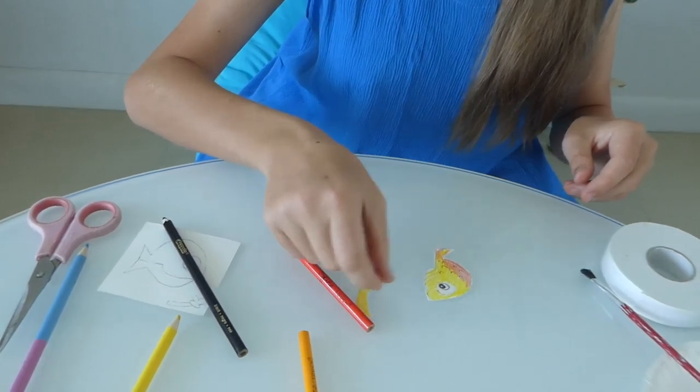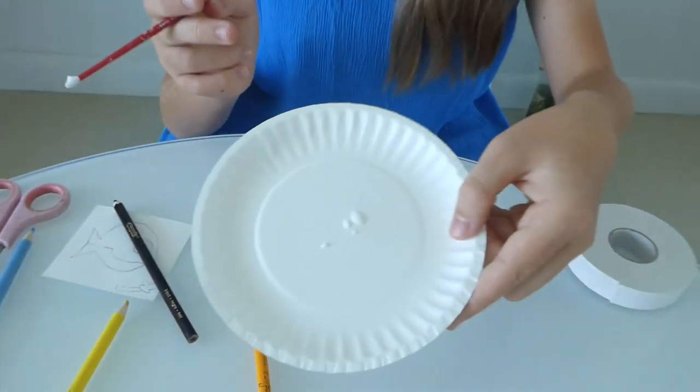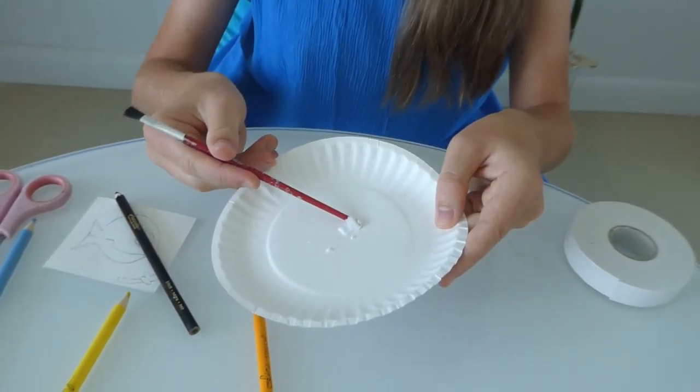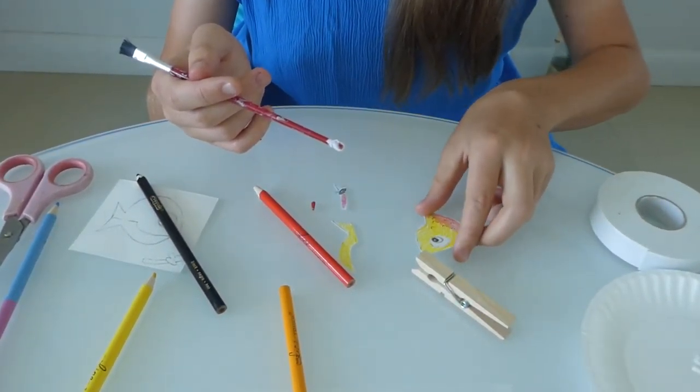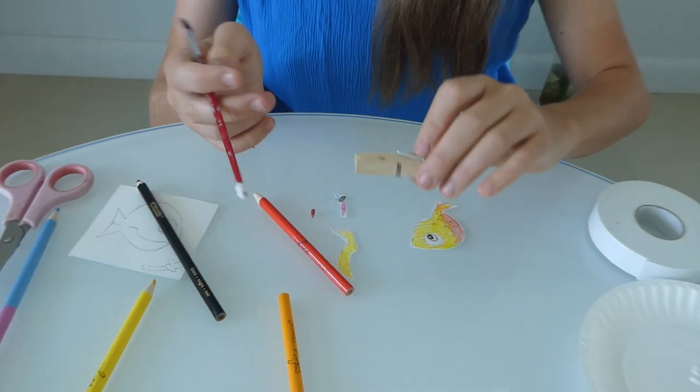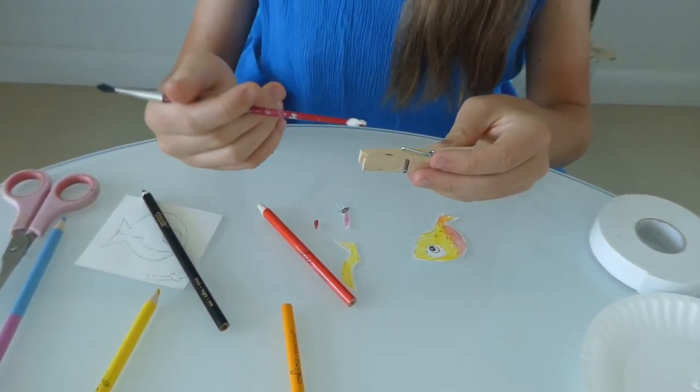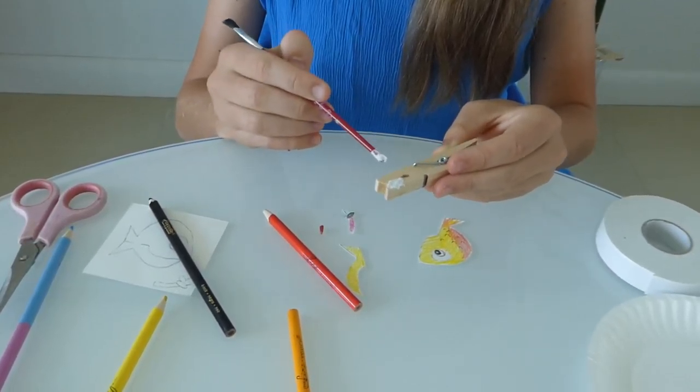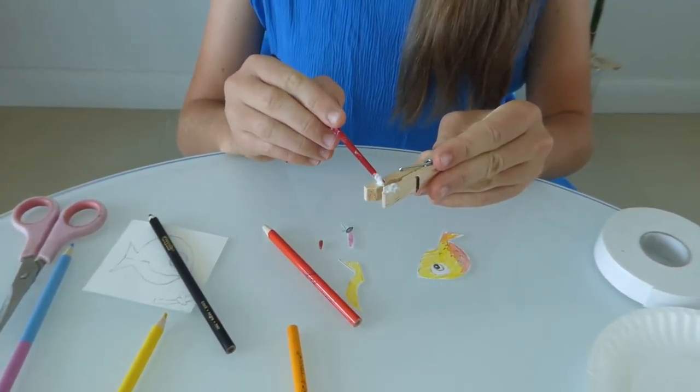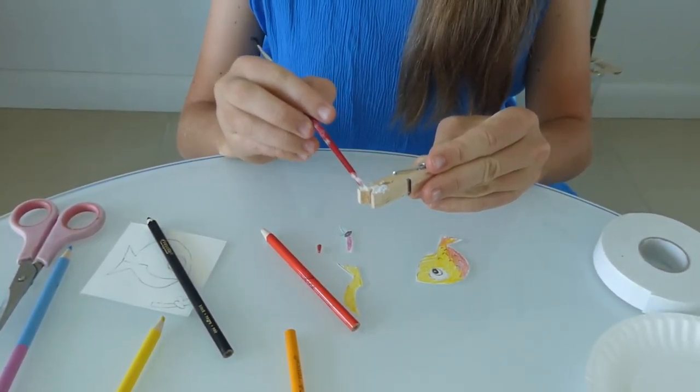you are going to take your tacky glue. I have already taken out some glue on my paintbrush. And I am going to glue right here. And I am going to glue right here on the clothespin. On the end here. And also on the end here.